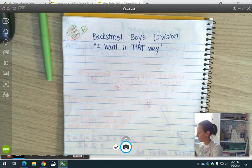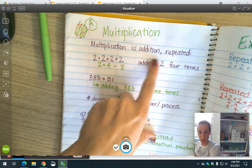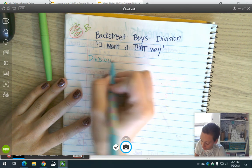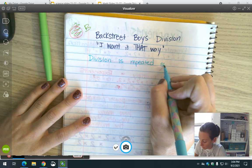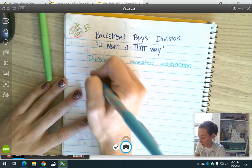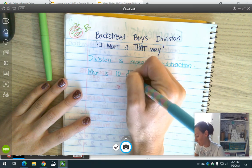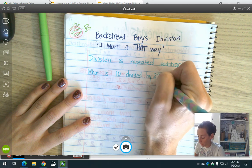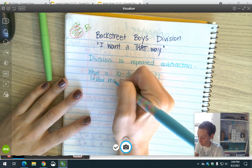Just like we talked about with multiplication being addition repeated, division is repeated subtraction. When we ask a question like what is 10 divided by 2, what we're really asking is how many times can I subtract 2 from 10?